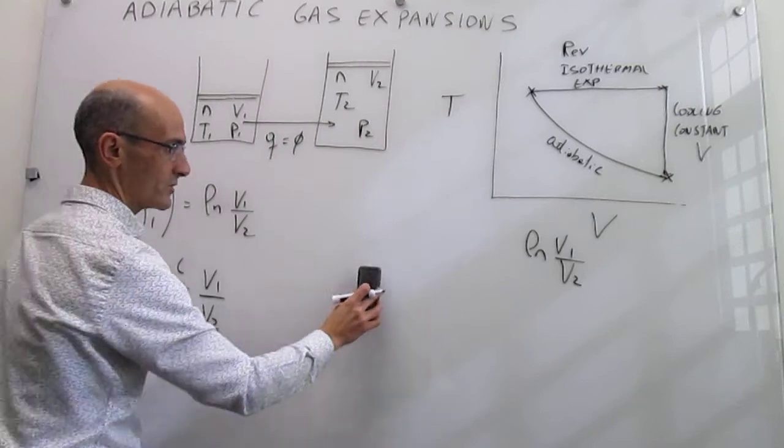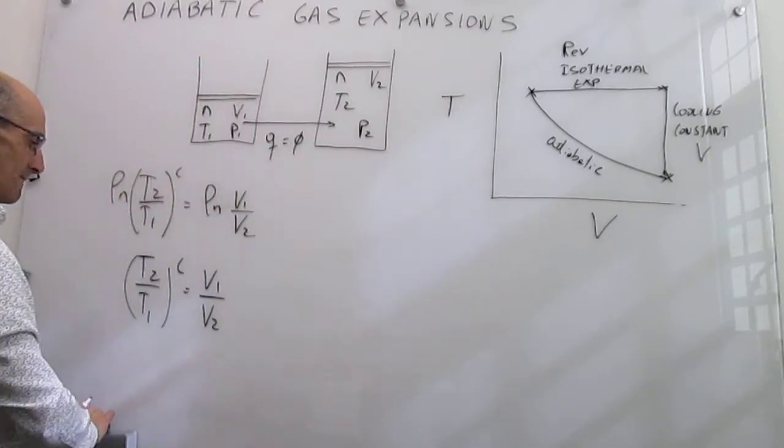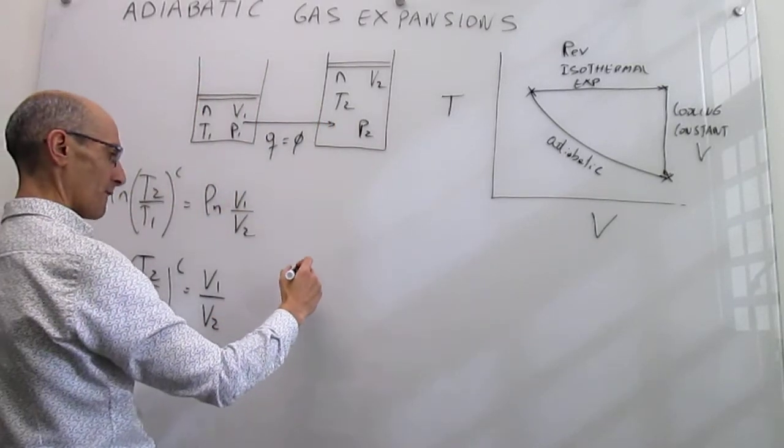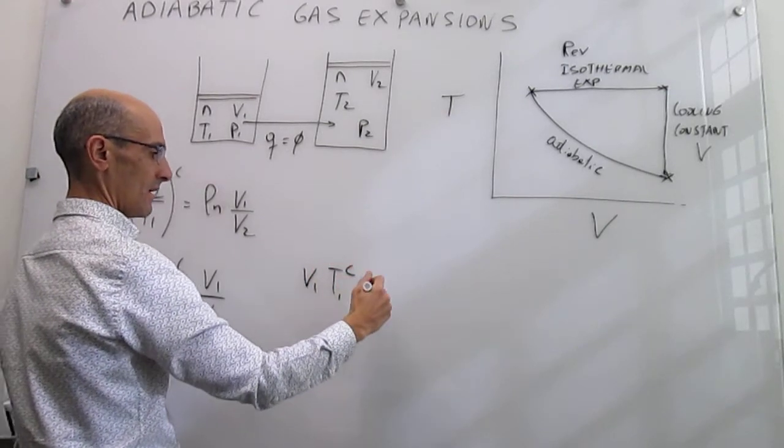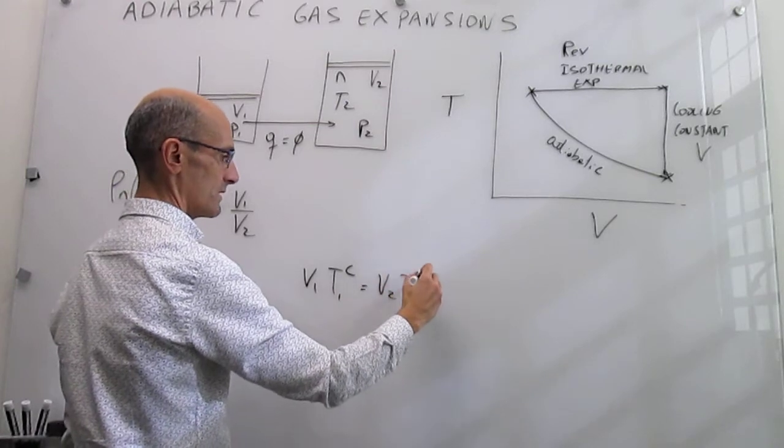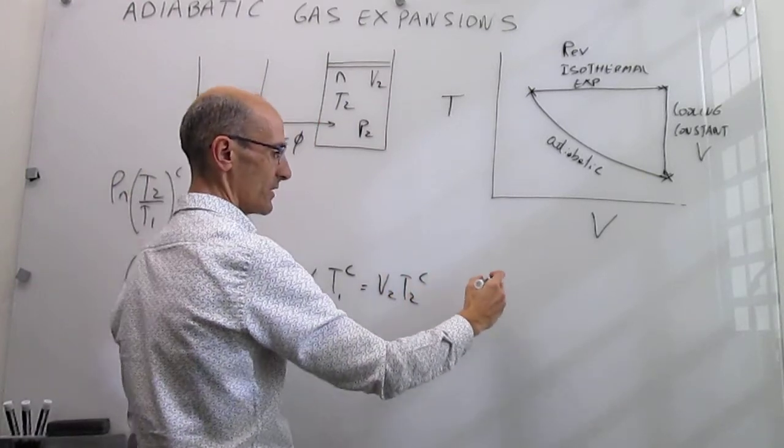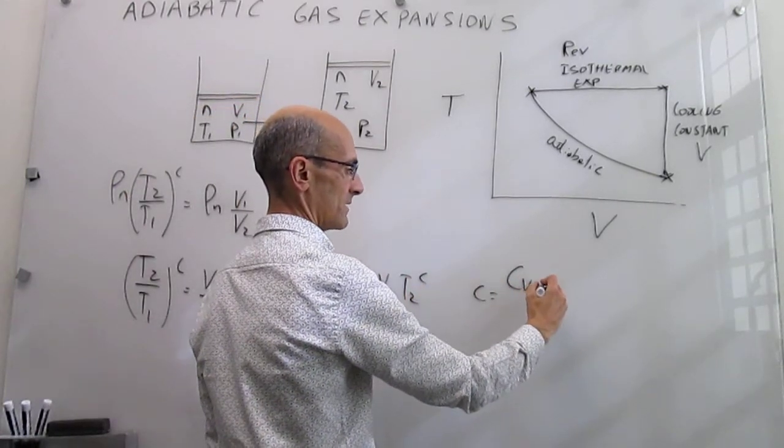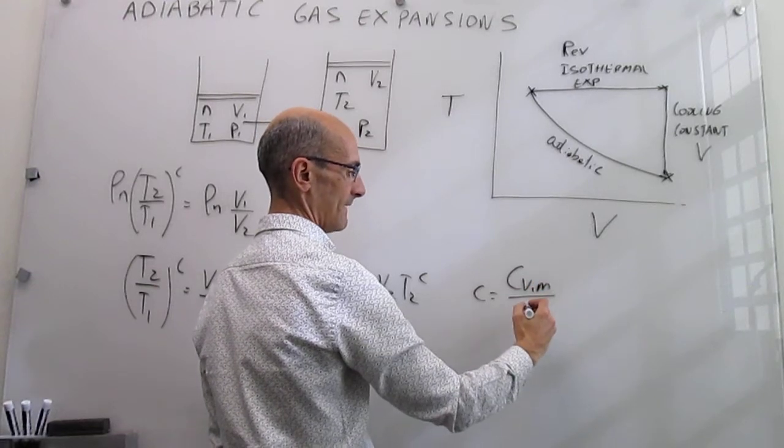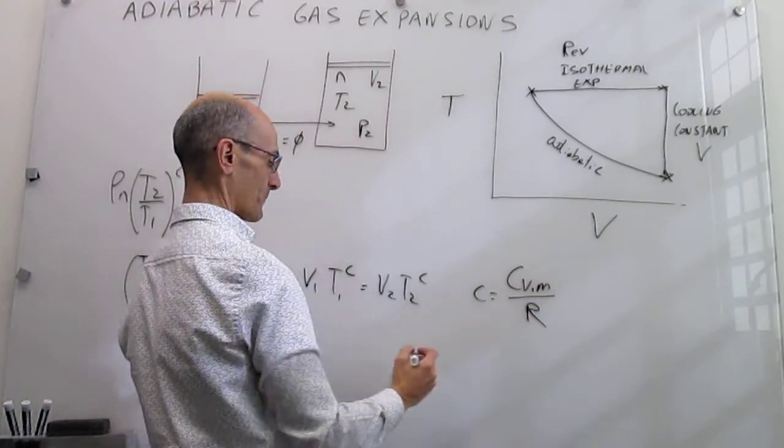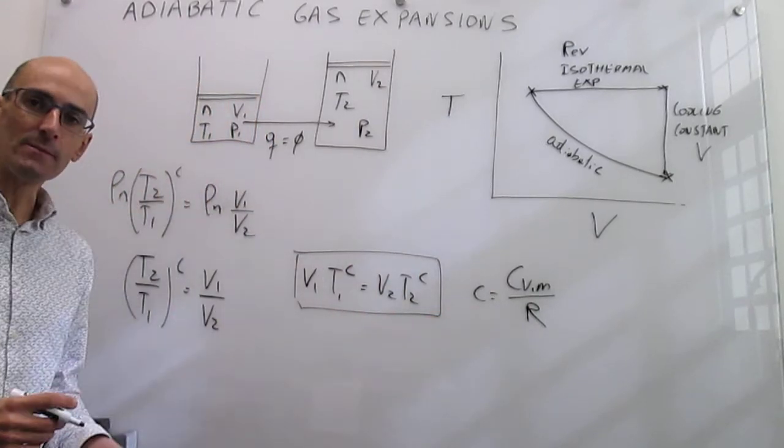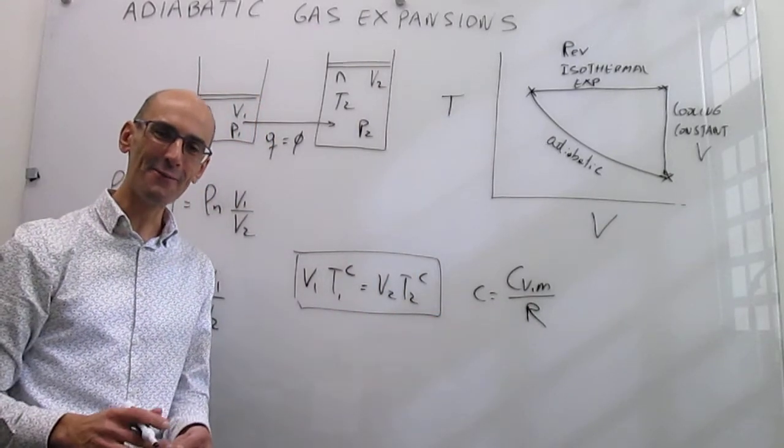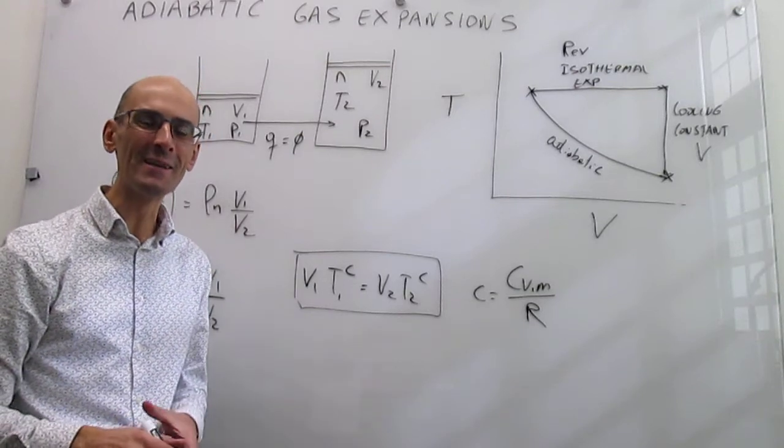And that final expression is V1 T1 to the c is equal to V2 T2 to the c, where c is just a ratio of the heat capacity at constant volume per mole divided over R. So that is the relationship between volumes, initial volumes and temperatures, and final volumes and temperatures in an adiabatic gas expansion.